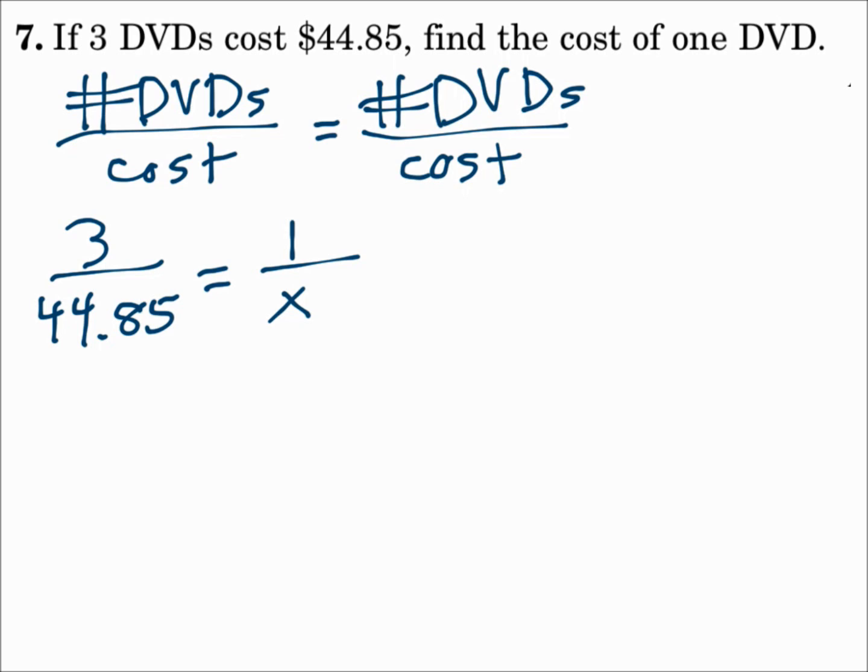Three DVDs over the cost $44.85 would then equal one DVD over the unknown cost. So that's where x goes. But just make sure it's organized. In this case, DVDs over cost equals DVDs over cost. So solve the proportion by cross multiplying. 3 times x equals 44.85 times 1, which is just 44.85.